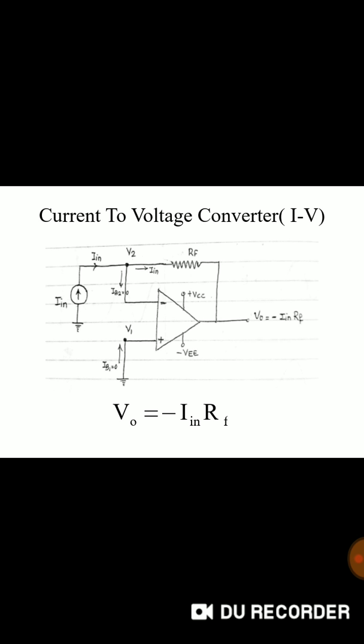Gain of inverting amplifier is given as minus RF by R1 and therefore VO is equal to minus RF by R1 times Vn. But from the concept of virtual short, virtual ground we can say that V1 is equal to V2 equal to 0, and therefore the inverting terminal is also at ground potential and the entire input voltage appears across R1 only. Input current is equal to V1 is equal to IN times R1.